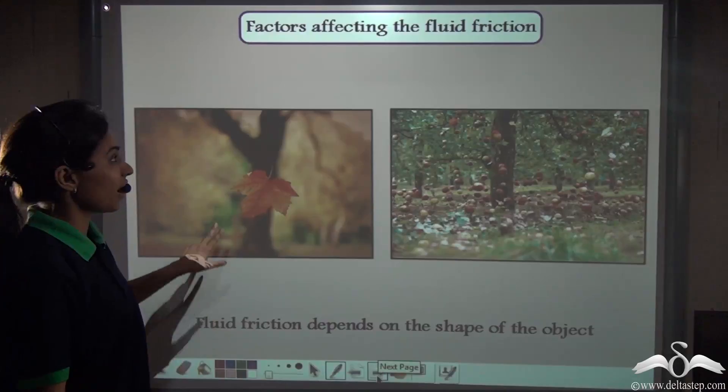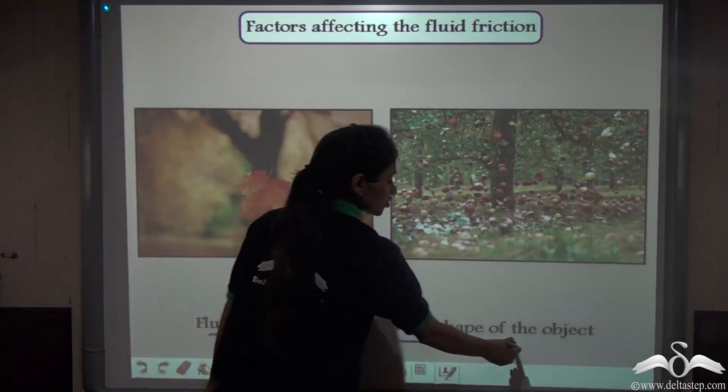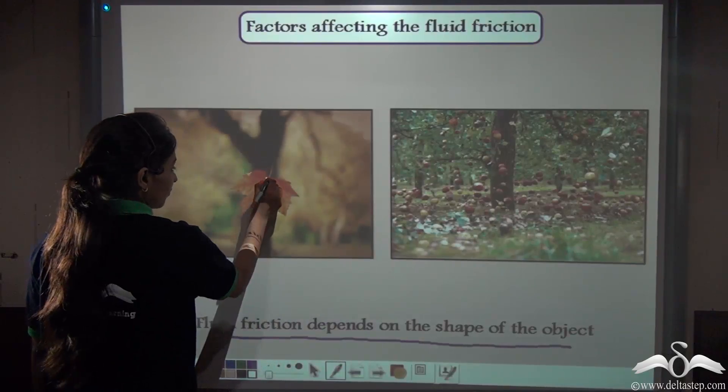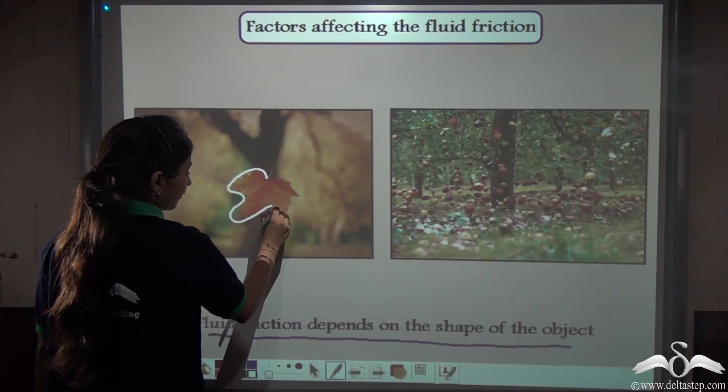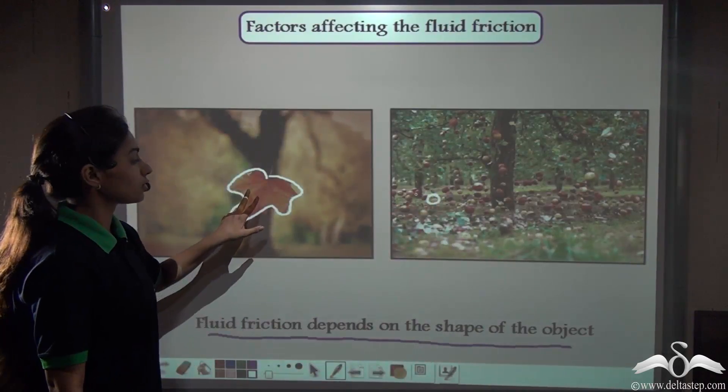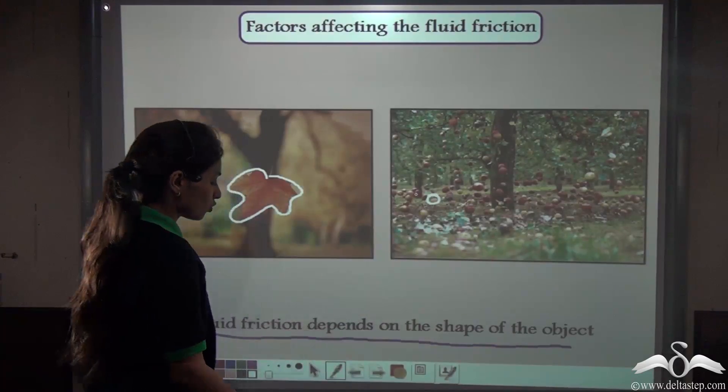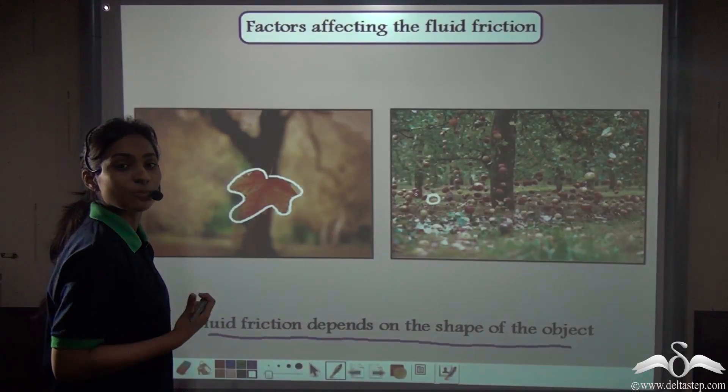This factor affects the fluid friction. Fluid friction depends on the shape of the object. Here, we could see that the shape of this leaf is actually giving a bigger surface area than this fruit. So, this fluid friction is acting more on this leaf than the fruit. So fluid friction depends on the shape of the object.